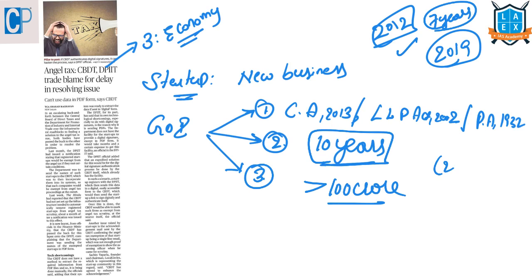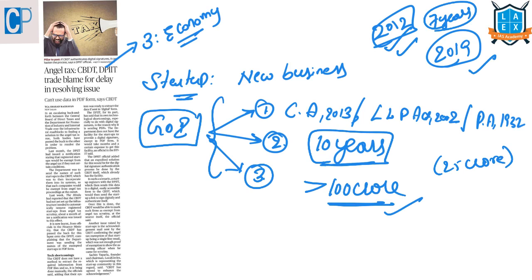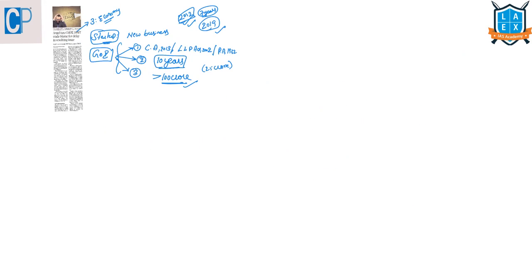The last condition is that from the date of registration, in none of the years should the company's turnover be beyond 100 crore rupees — previously it was 25 crore, now it is 100 crore. That means from 2012 till 2019, not even in a single year should total turnover exceed 100 crores. If a company satisfies all three conditions, according to the Government of India, that company will be granted the status of startup.